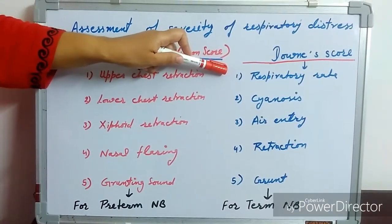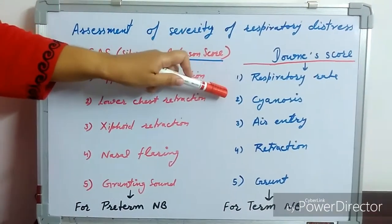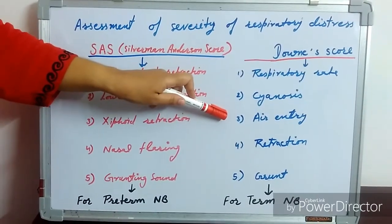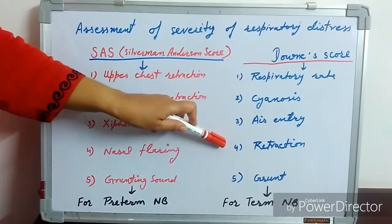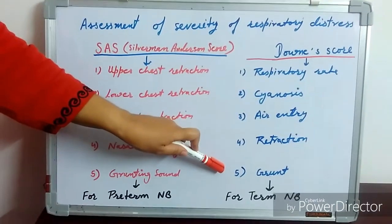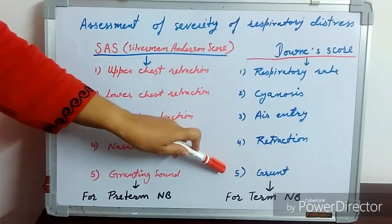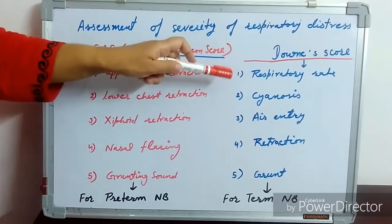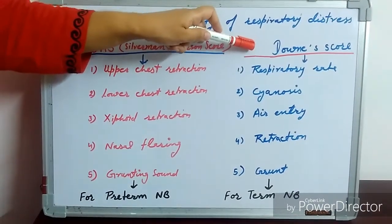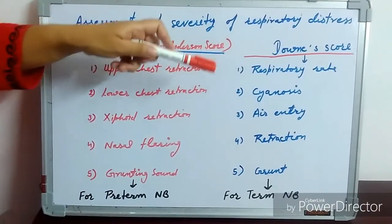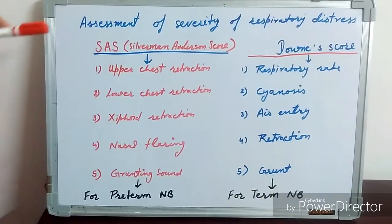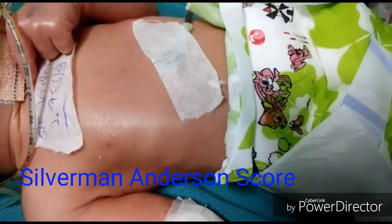In the Downe's scoring system, we have to calculate the respiratory rate, look for cyanosis, auscultate for air entry, look for retractions, and assess grunting sound. The minimum and maximum scoring range in Downe's is the same as in the Silverman-Anderson scoring system.